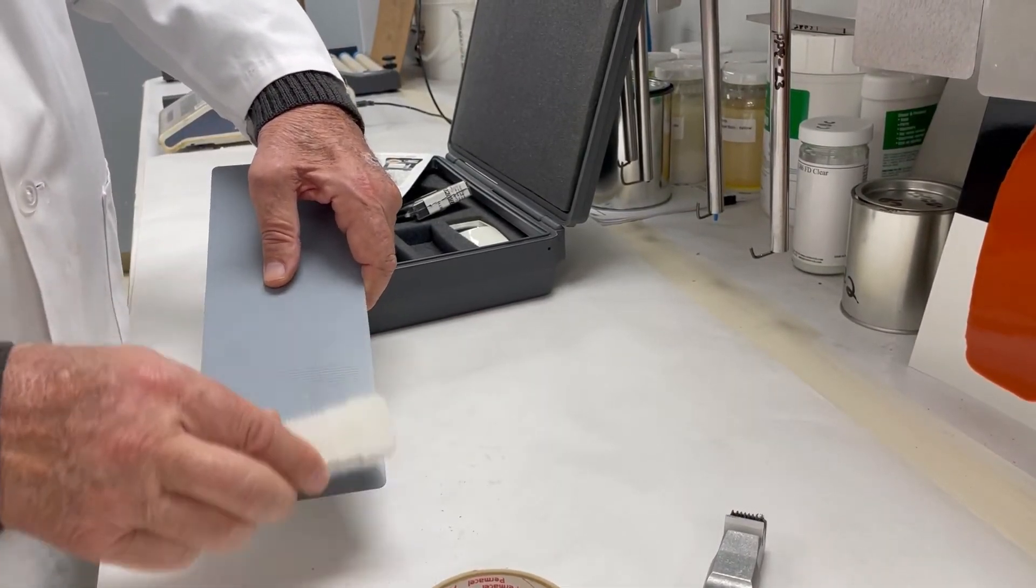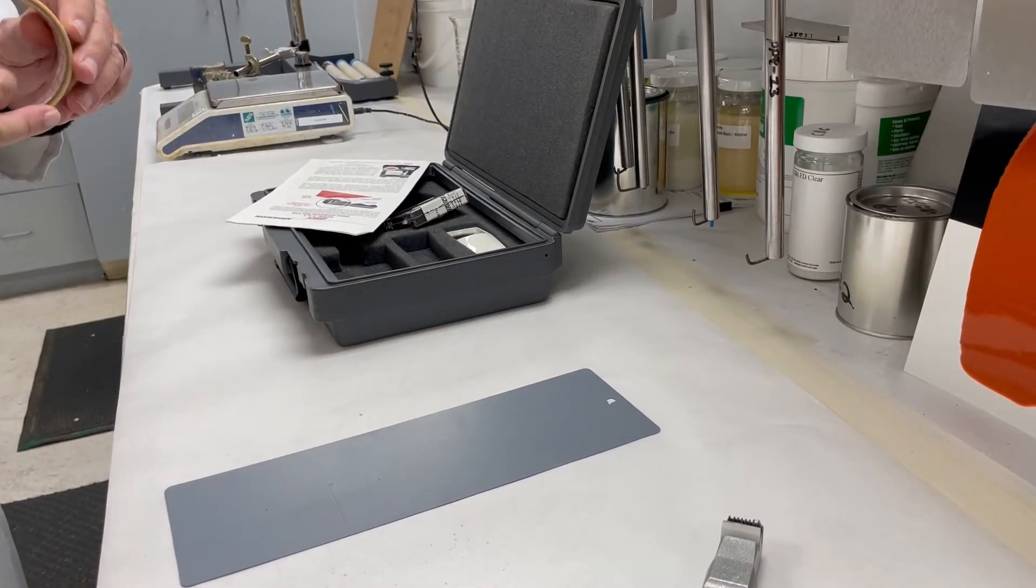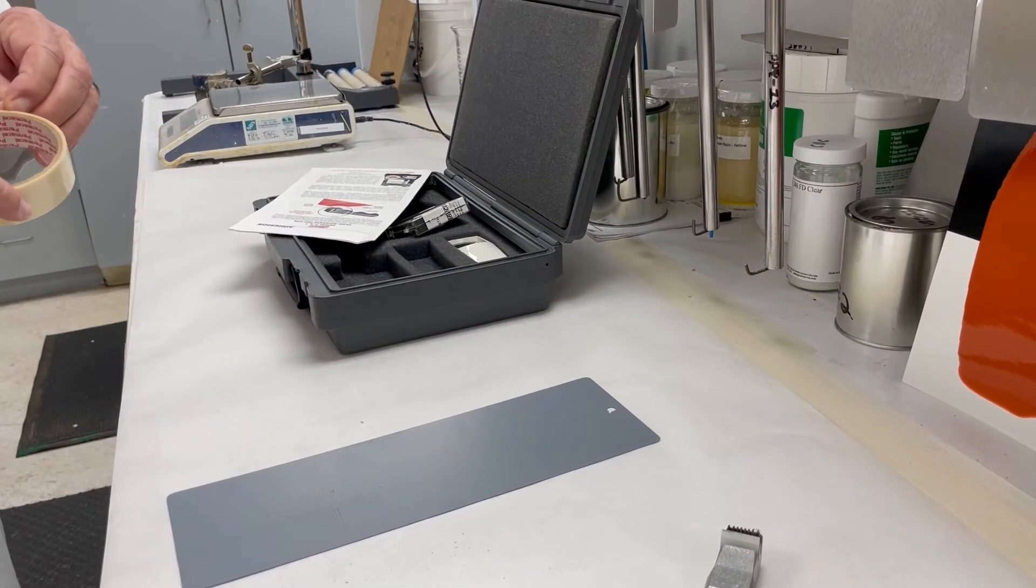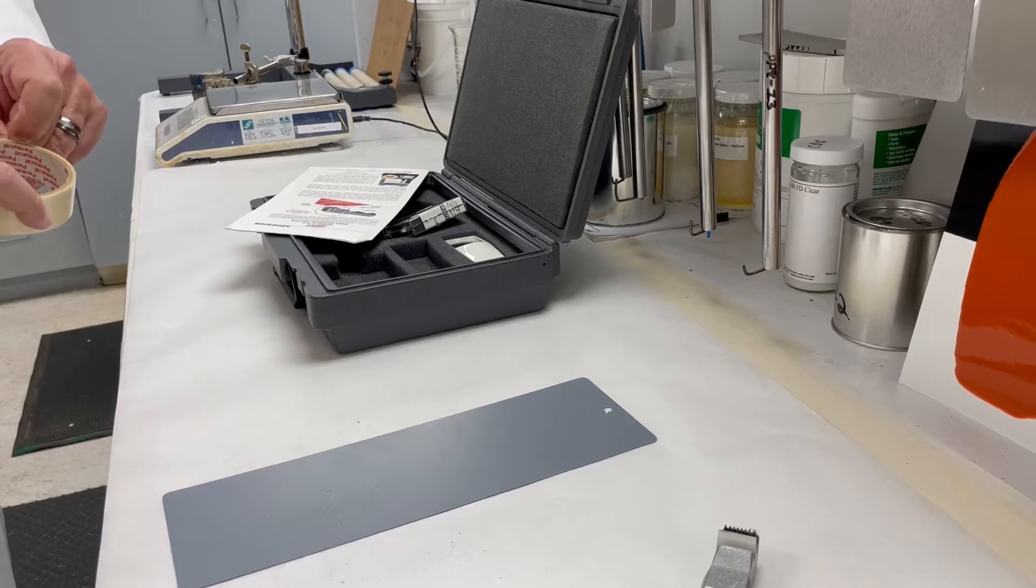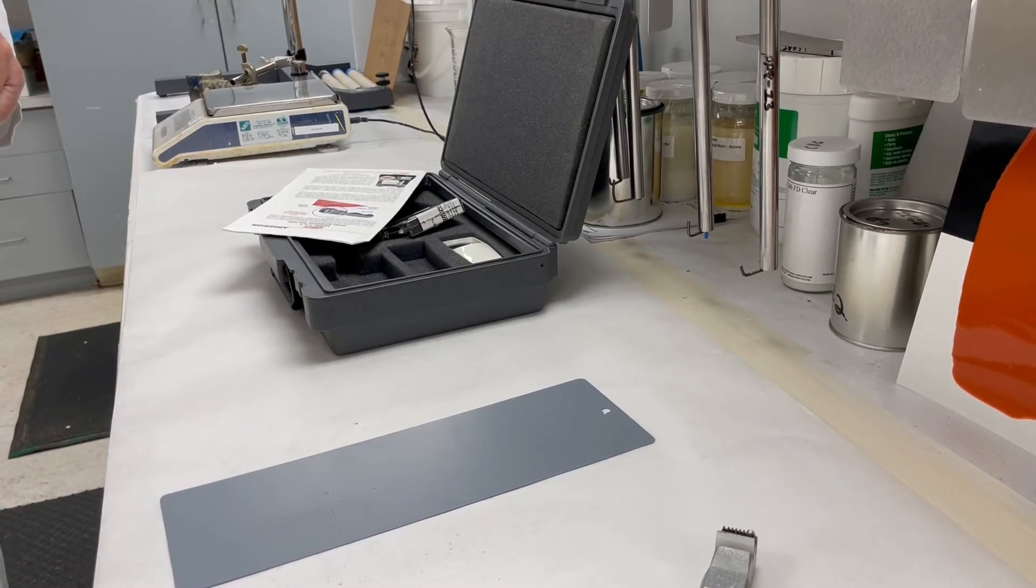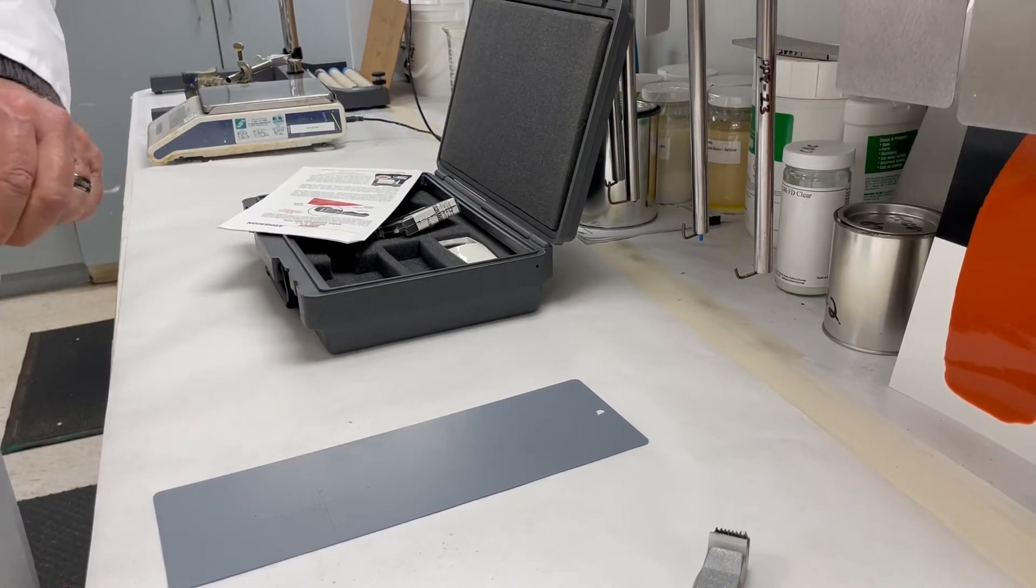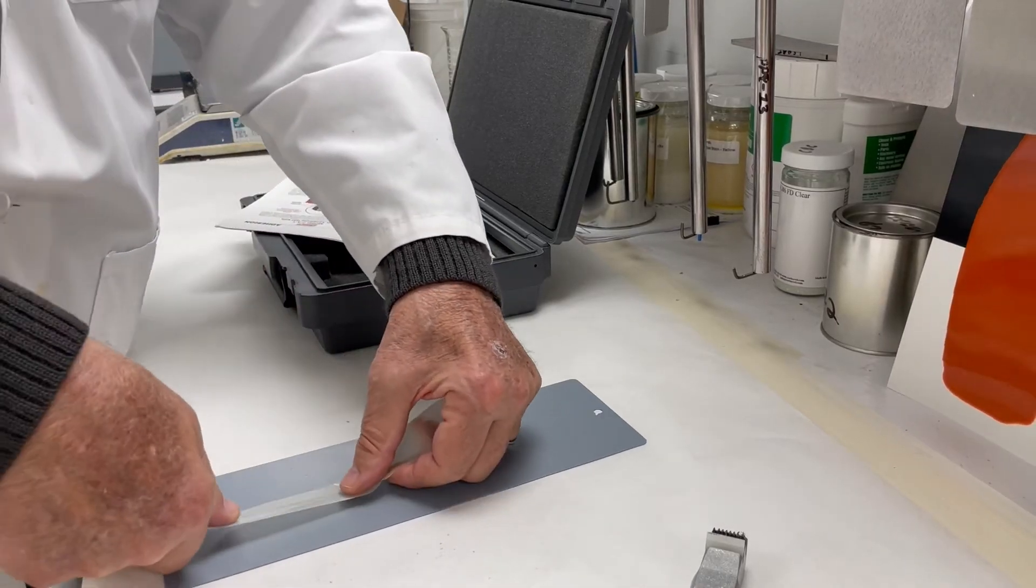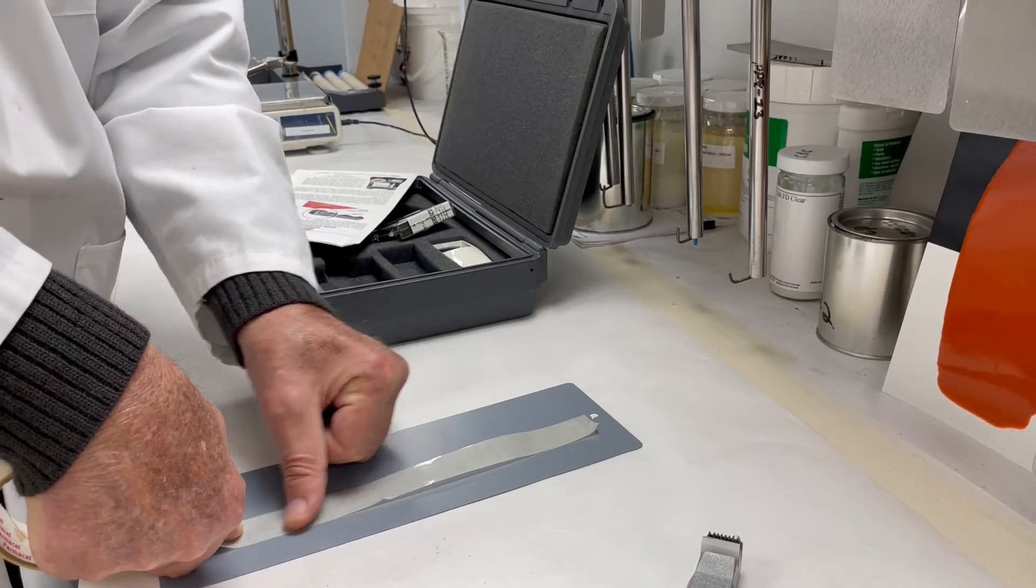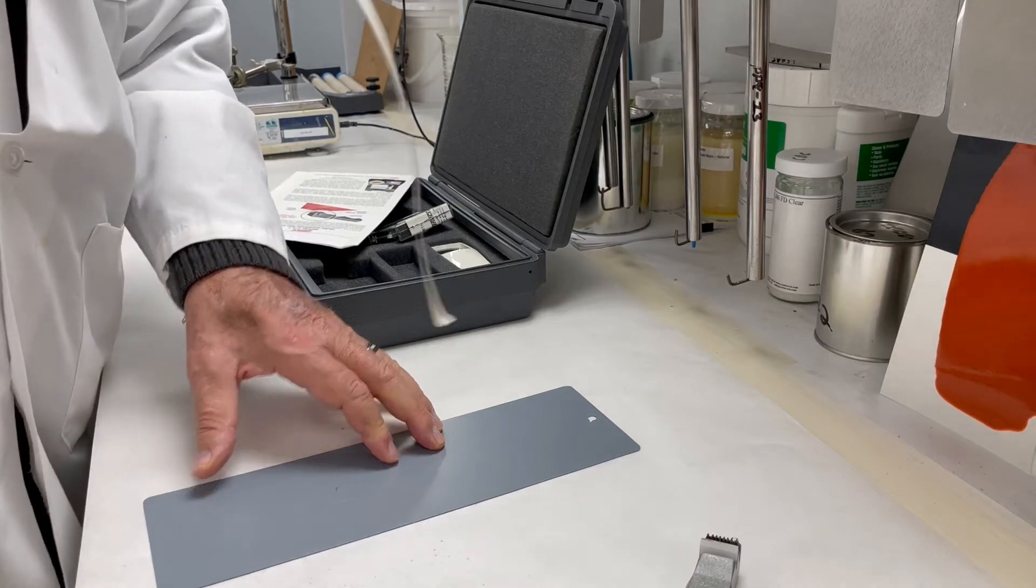Brush off any loose coating. Now you'll take a piece of tape, which I should have pre-folded. What we normally do is pull it down, make sure you get all the air bubbles out of it, and then pull it up at a steady pace.